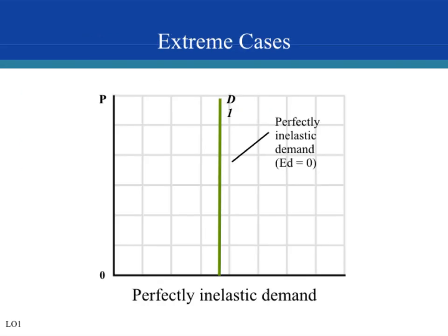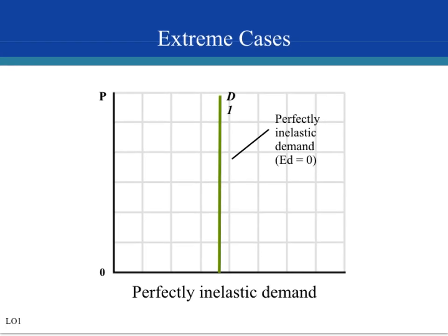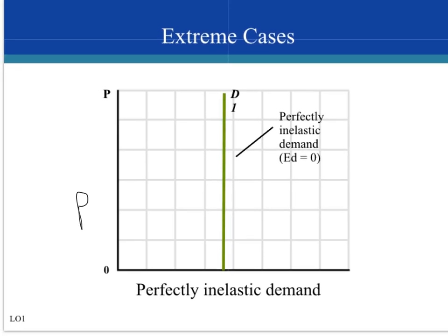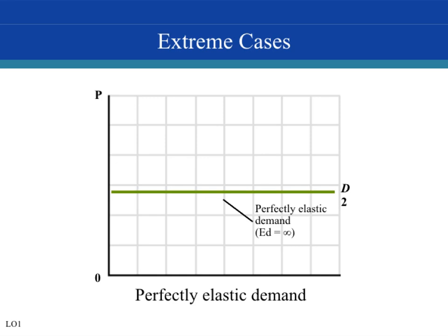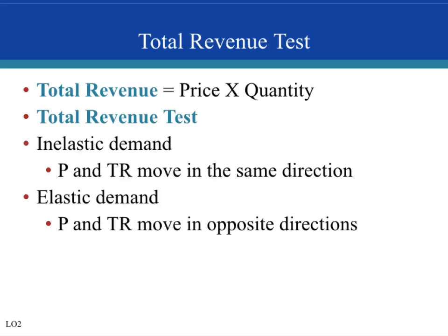Here we have a graph for perfectly inelastic demand, using insulin as an example. Price goes from P1 to P2 — it increases — but demand for insulin does not change; it stays the same. And if price goes back down from P2 to P1, demand for insulin stays the same. The other extreme is perfectly elastic demand, where a price increase will cause demand to go from infinite to zero.